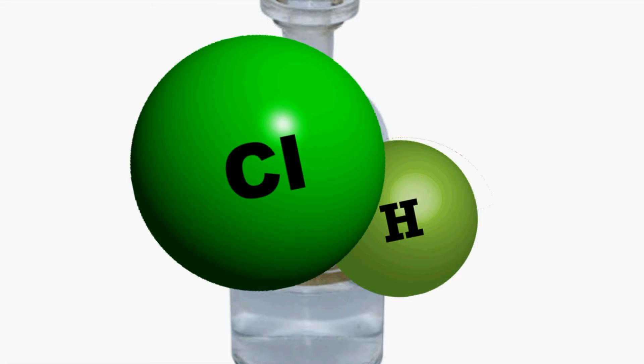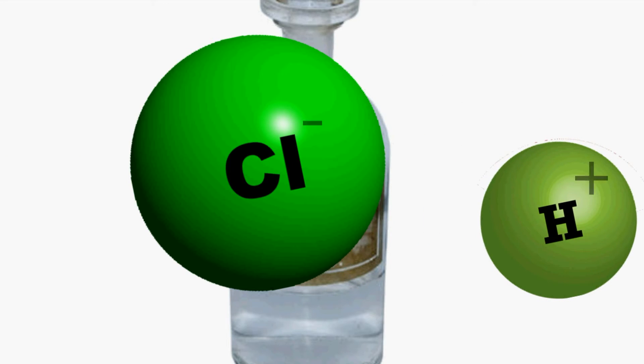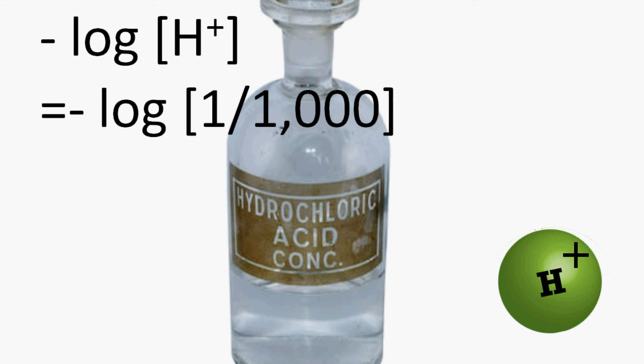If we add a little bit of acid, say hydrochloric acid or sulfuric acid, that molecule breaks down and forms hydrogen ion. So concentration of hydrogen ion increases. Say now hydrogen ion is 1 in 1000 molecules.